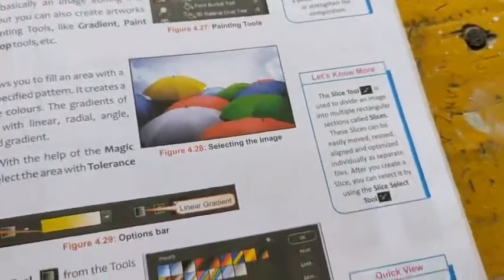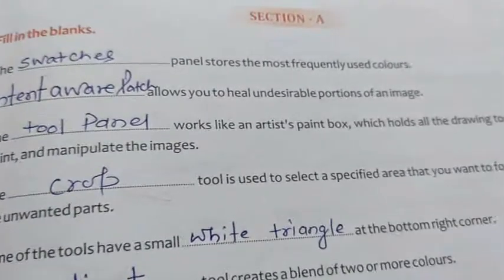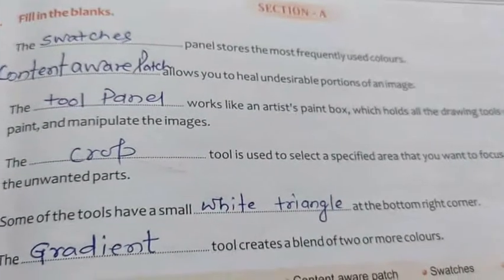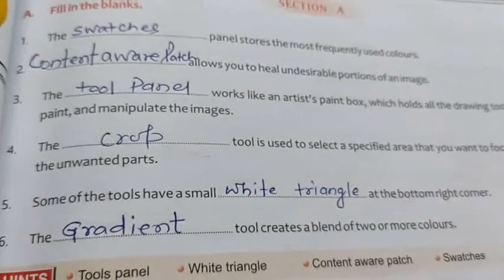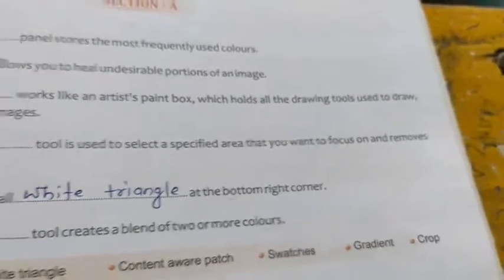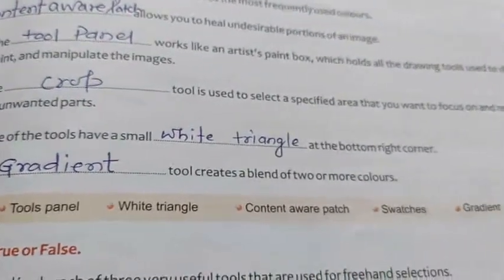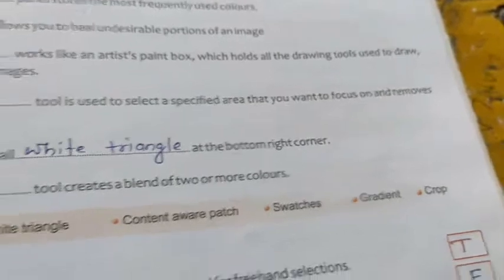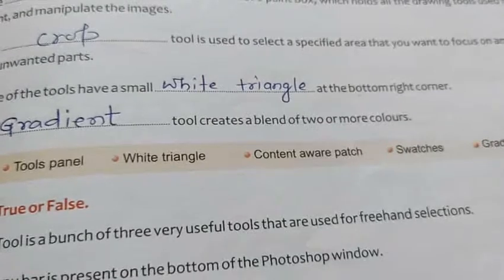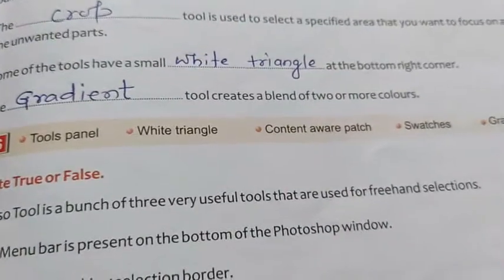Fill in the blanks: The swatches panel stores the most frequently used colors. The content-aware patch allows you to heal a portion of the image. The tool panel works like an artist's paint box, holding all drawing tools used to draw, paint, and manipulate an image. The crop tool is used to select a specified area and remove unwanted parts. Some tools have a small white rectangle at the bottom right corner. The gradient tool creates a blend of two or more colors.